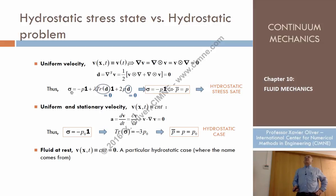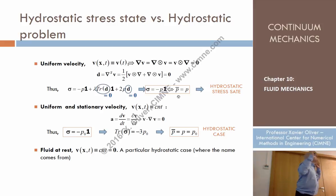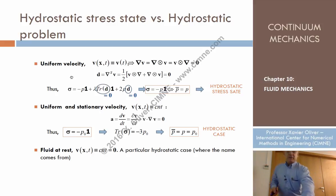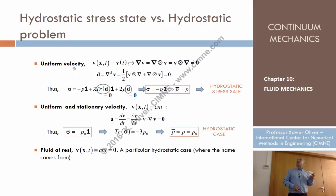For Newtonian fluids, the stress has a term depending on d, which is zero, and another term also zero. So finally the stresses equal minus p times the identity tensor. This is what we generally define for any continuum medium as the hydrostatic stress state. Even with uniform velocity producing a hydrostatic stress state, this doesn't mean this case corresponds to what we will call hydrostatics.